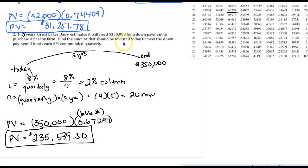Multiplying, I end up with the value $235,539.50. In this case, it just asks us to find the funds invested today — it did not ask us to calculate the interest.